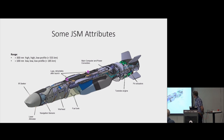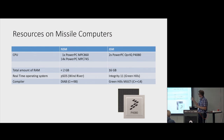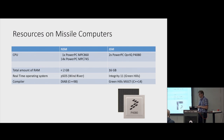And of course we have computers and power converters. A generation in missile computing is like decades of generation in computer platforms. For the NSM we used the PowerPC MPC 860 platform. Today we have the CoreID P4080, which is a lot faster — I don't know how many gigahertz difference, but it's a lot. We have a lot more RAM, different operating systems. We already started using C++ in NSM development, and C++ has been our development language since 1995.